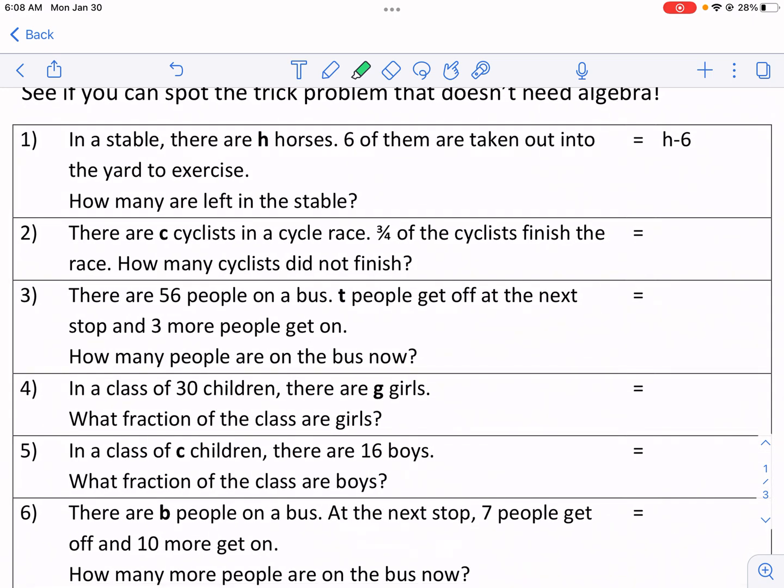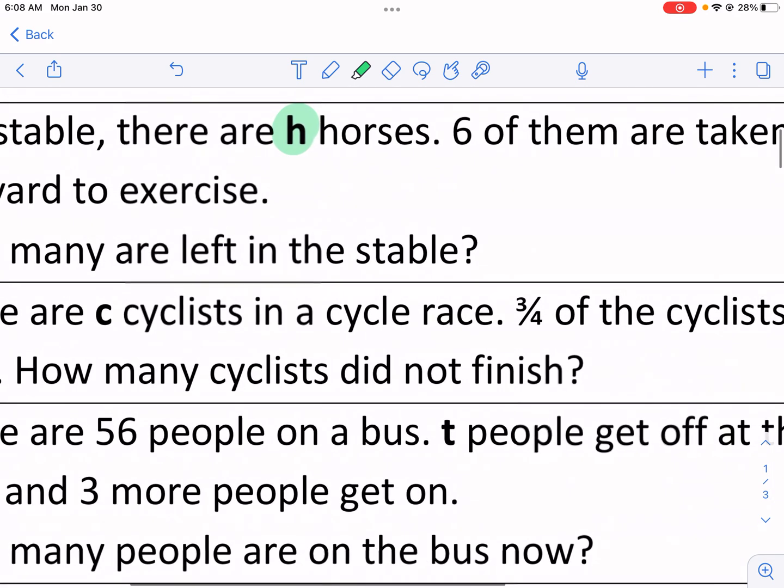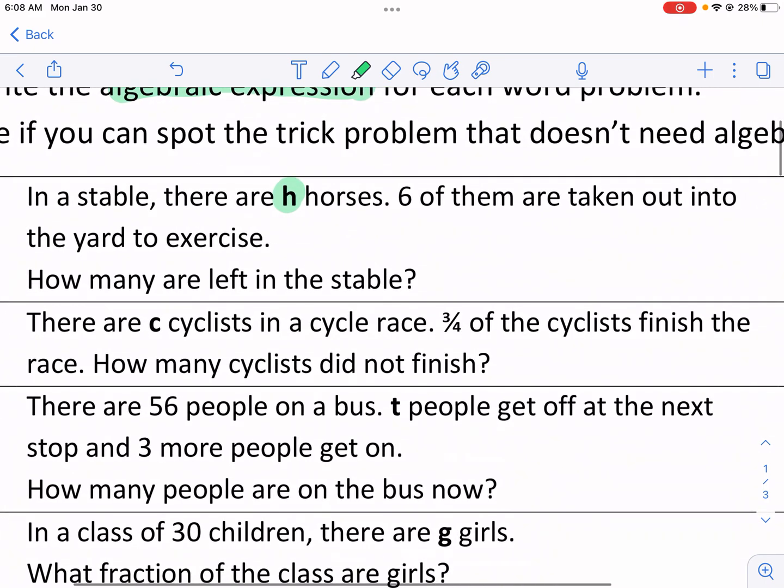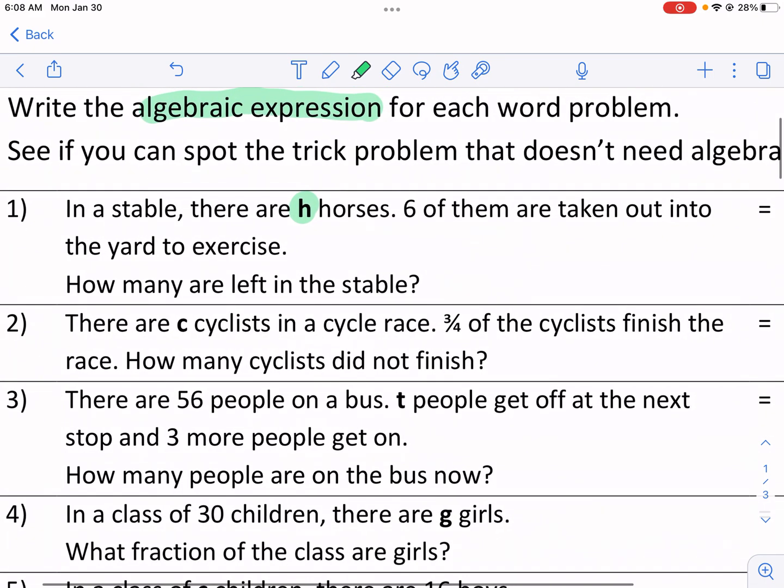So the example is, in a stable, there are h horses. So know that that is an unknown value. That's a variable, an unknown value. We don't know how many horses there are. But we know that 6 of them are taken out into the yard to exercise. How many are left in the stable?